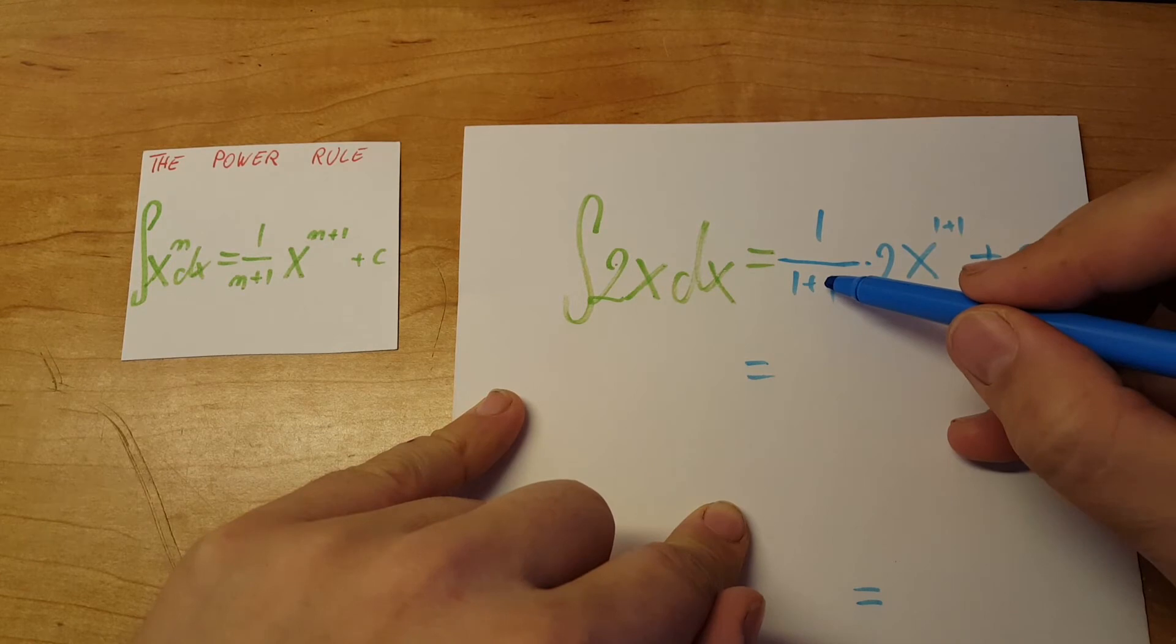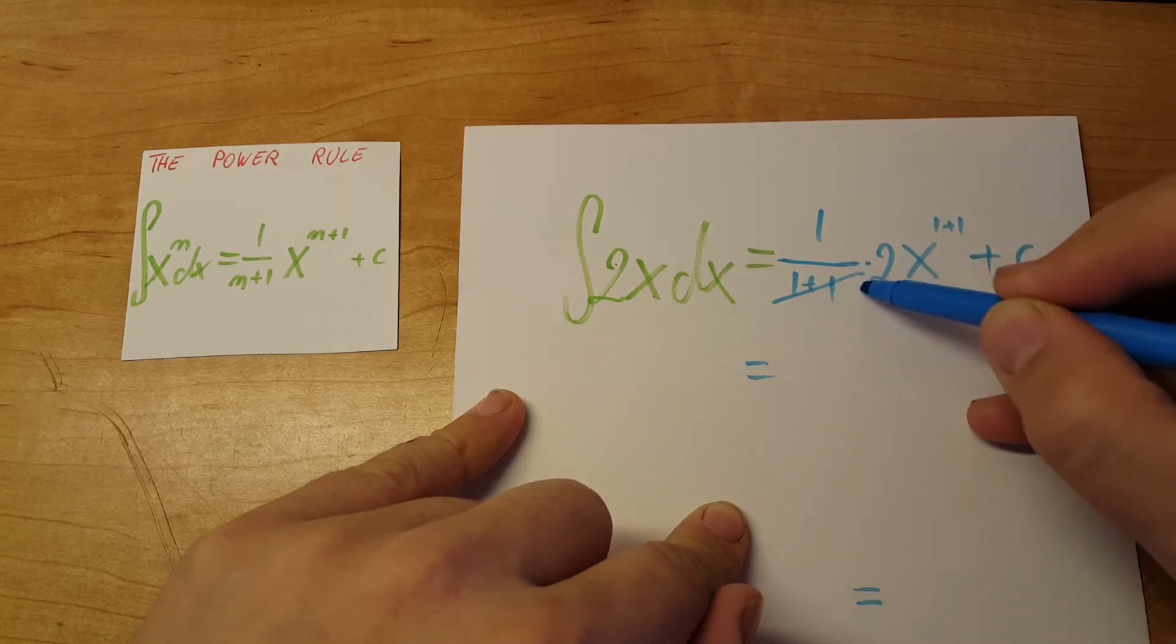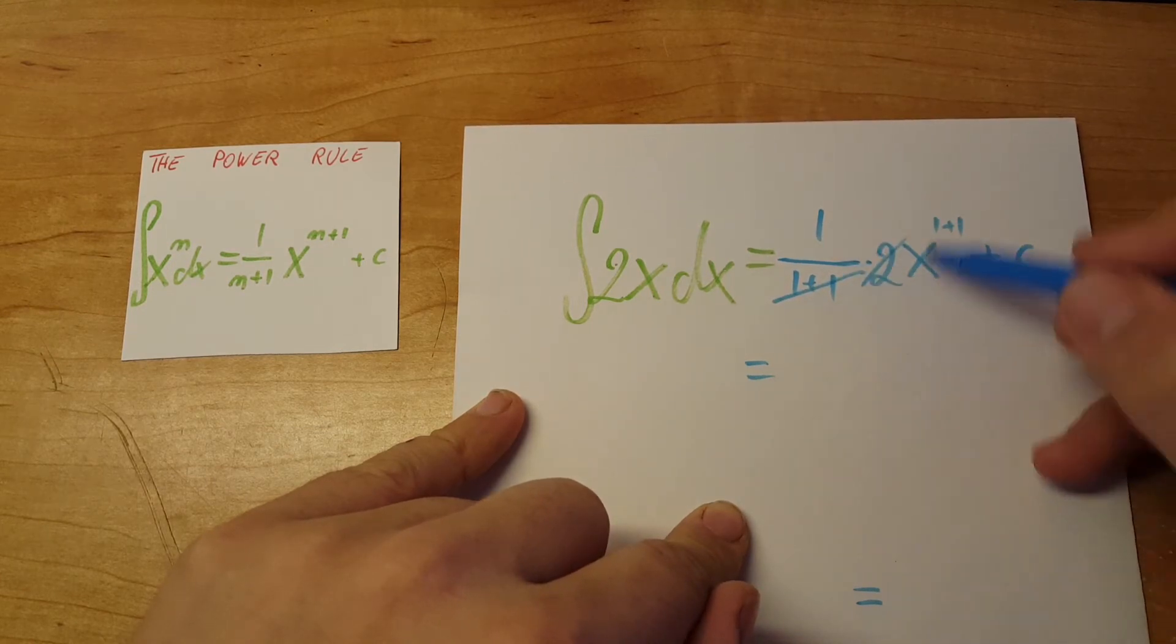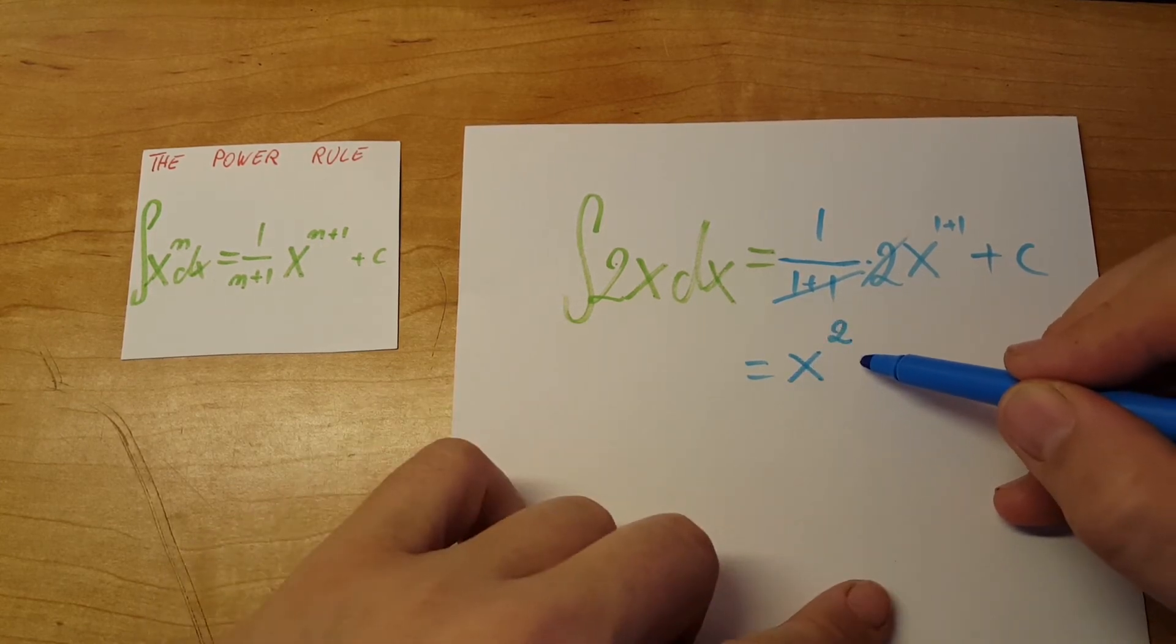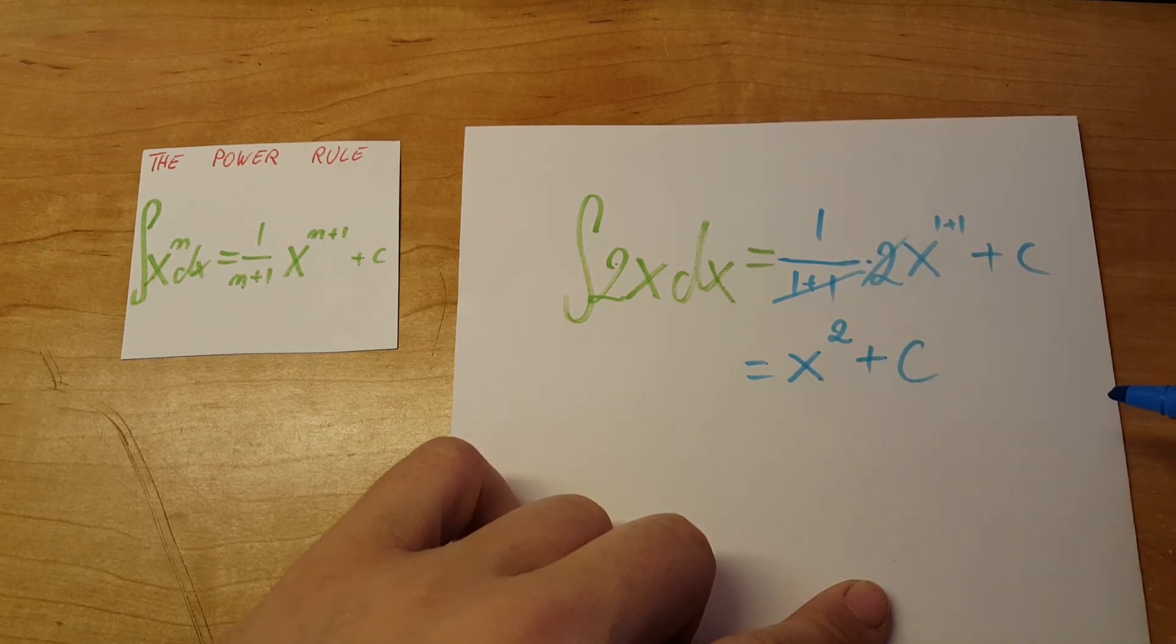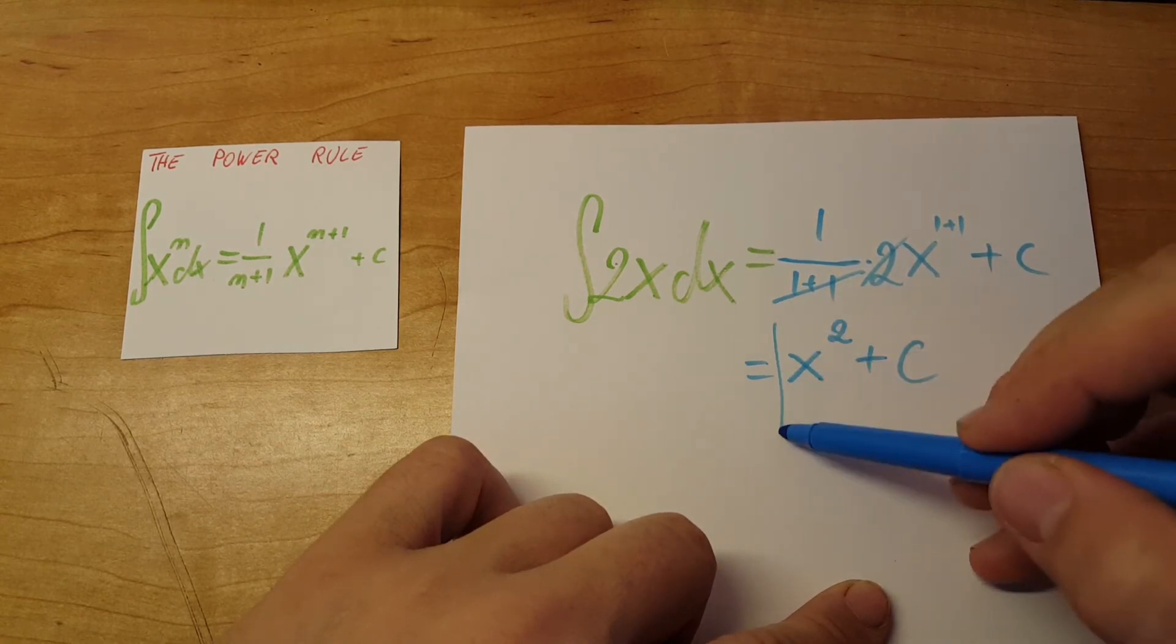Let's sum it up. This will turn into a two, so two cancels with this two. We'll have only one, so equals x to the square plus c. There you go, and this is our answer.